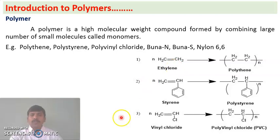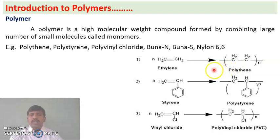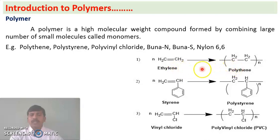Ethylene monomer gives rise to polythene. The chemical reaction by which monomers are combined to give a polymer is called polymerization. So ethylene giving rise to polythene is one example of polymerization.